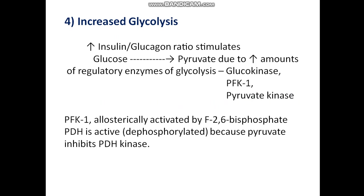Fourth is increased glycolysis. Increased glucose and an increased insulin-to-glucagon ratio stimulate glycolysis. Glucose is converted to pyruvate via regulatory enzymes of glycolysis induced by insulin — glucokinase, PFK, and pyruvate kinase. PFK is allosterically activated by fructose-2,6-bisphosphate. Pyruvate dehydrogenase (PDH) is active in its dephosphorylated form because pyruvate inhibits PDH kinase, leading to synthesis of acetyl-CoA from pyruvate.